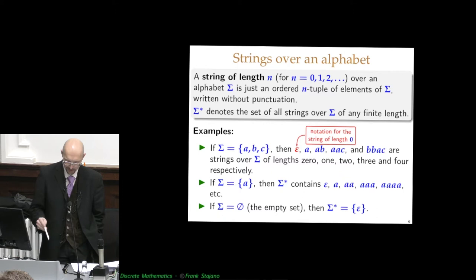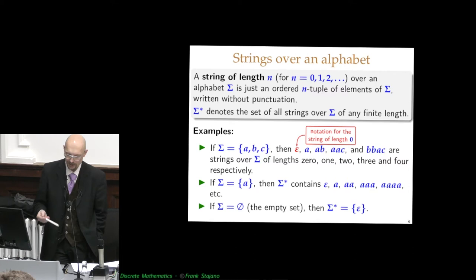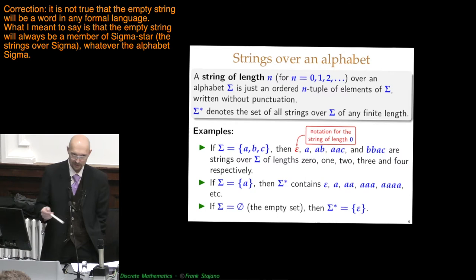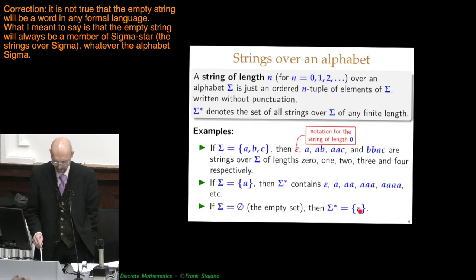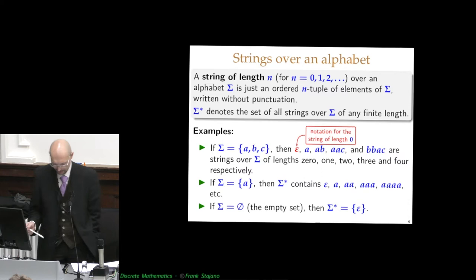If your alphabet is the empty set, which strings can you make over it? Well, you can make at least one string, which is the empty string. The empty string will be a word in any formal language, whatever the alphabet. In this case it contains nothing else, because there are no other characters you can put in the string. This epsilon is not a character of the alphabet — it's a meta-character to describe the empty string.